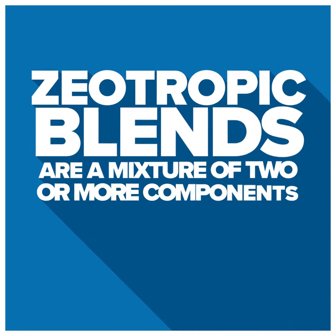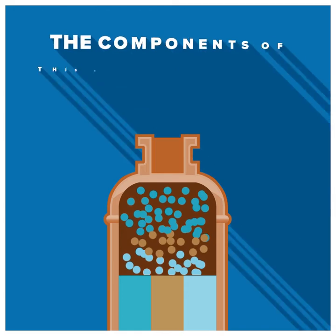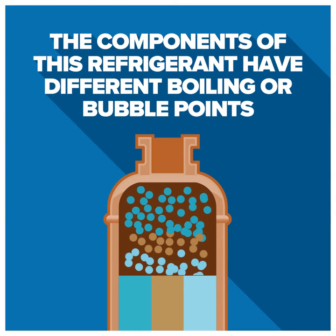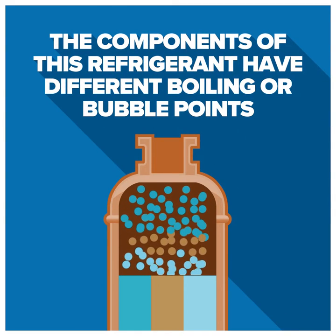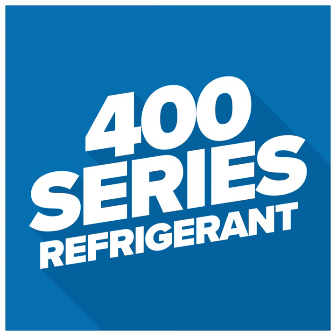Zeotropic blends are a mixture of two or more components. The components of this refrigerant have different boiling or bubble points. An example of a zeotropic blend is any 400 series refrigerant.